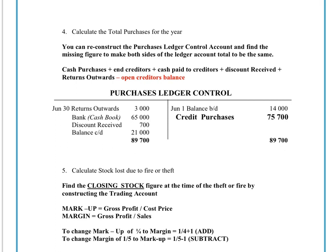Similarly, when looking for missing pieces of information or incomplete records, we could also use the purchases ledger, which is simply the total creditors. Instead of thinking of it as a debtor account, we think of it as a creditor account — so in some ways everything is reversed. We can work out the missing figure for credit purchases, providing we have the opening balance of creditors. If at the beginning of the month the purchases ledger showed we owed our suppliers $14,000, we can proceed.